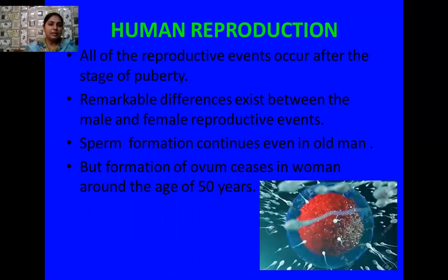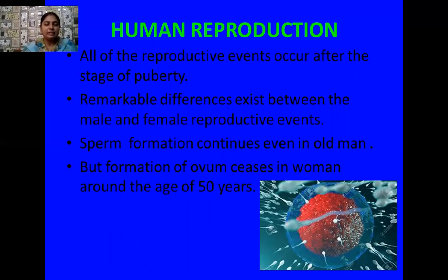Now we are going to study the male reproductive system, but before that I want to discuss some important points. All the reproductive events we have discussed occur in the human body after the stage of puberty. Puberty is that stage before reproduction where many developments take place in the reproductive organs — there is proper growth of the reproductive organs as well as secretion of hormones for their growth.